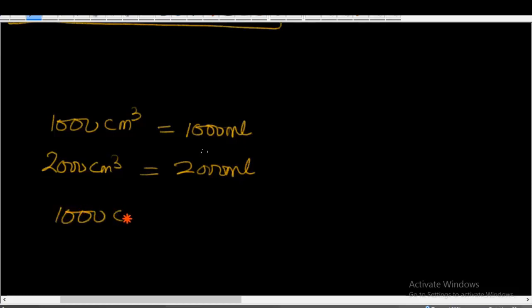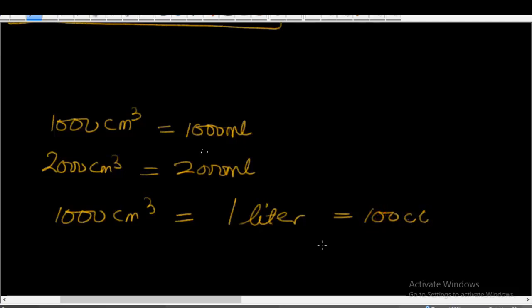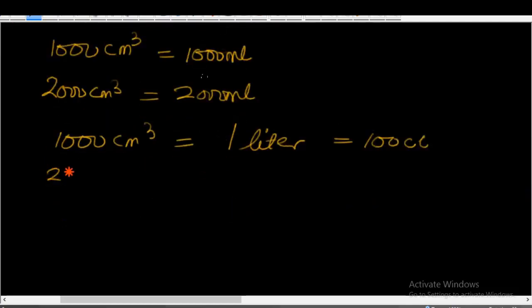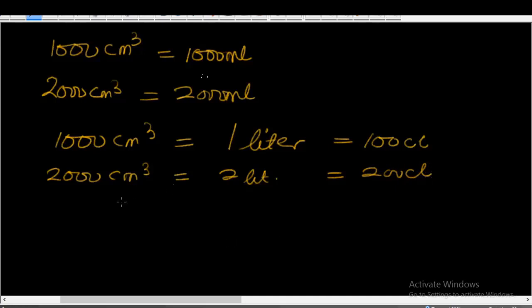1,000 cm³ is equal to 1 liter, and is also equal to 100 centiliters (CL). This also means that 2,000 cm³ is equal to 2 liters and is equal to 200 centiliters CL. This also means that 3,000 cm³ is equal to 3 liters and is equal to 300 CL.